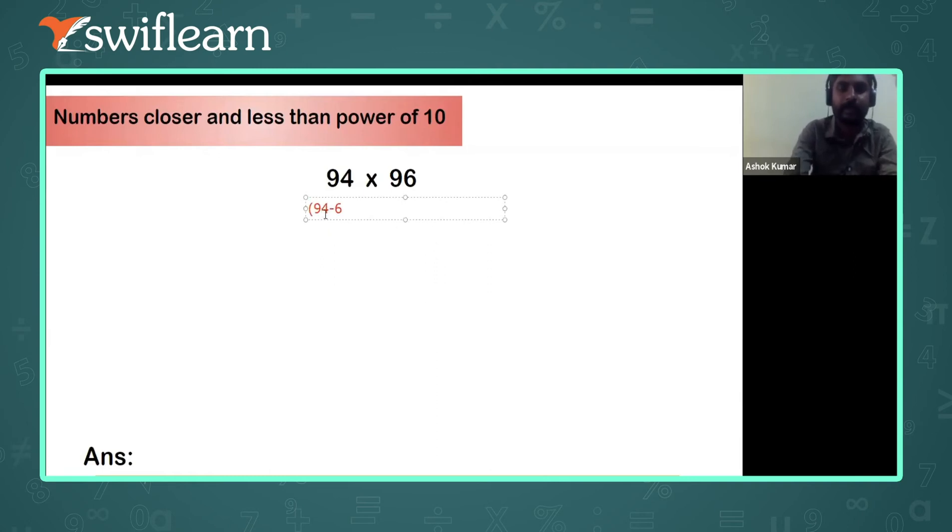So 94 minus 100, it will be minus 6, understanding? So now 96 minus 100 will be minus 4, correct. It will be minus 4. In the brackets you can write it as 96 minus 100.